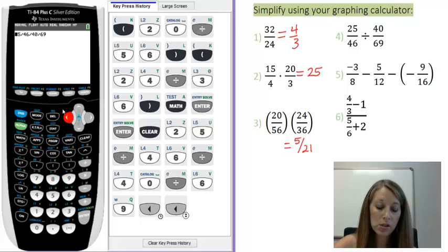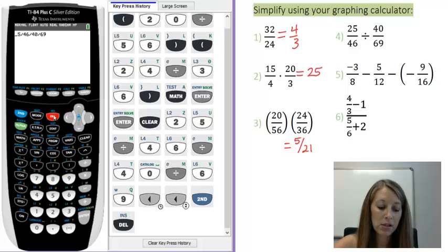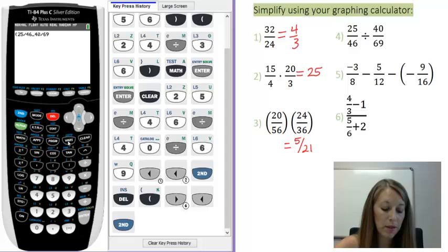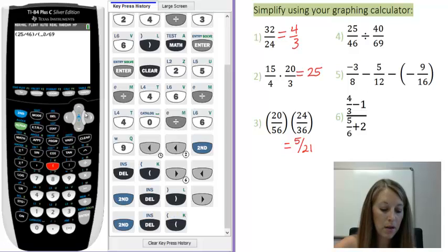The way to insert things is to use your INS or insert button. So second, and then the delete to insert. Notice it's blinking, that means it wants you to insert your thing here. So I insert my open parentheses, and I'm going to have to do this a few more times to close my parentheses there. Second, insert, close my parentheses. Second, insert, open, and then last over here on the right.